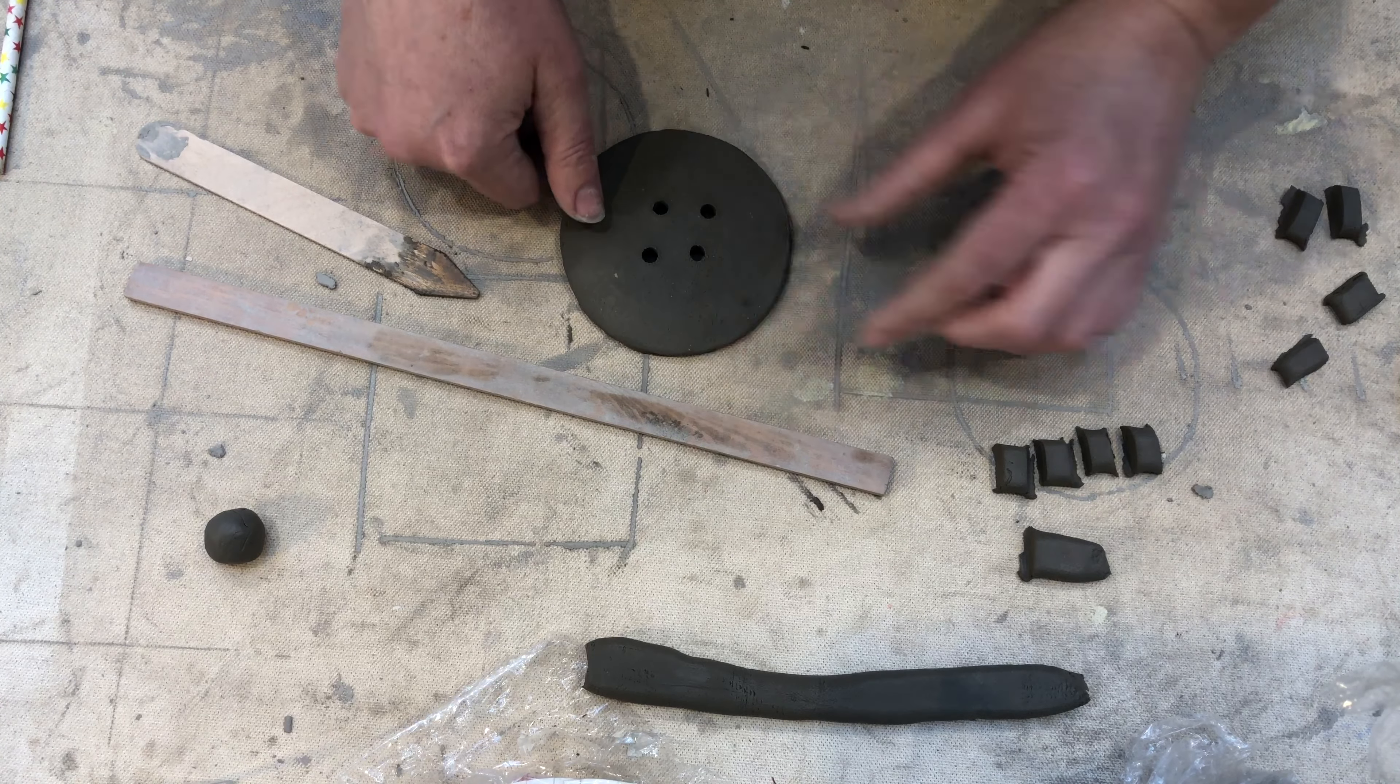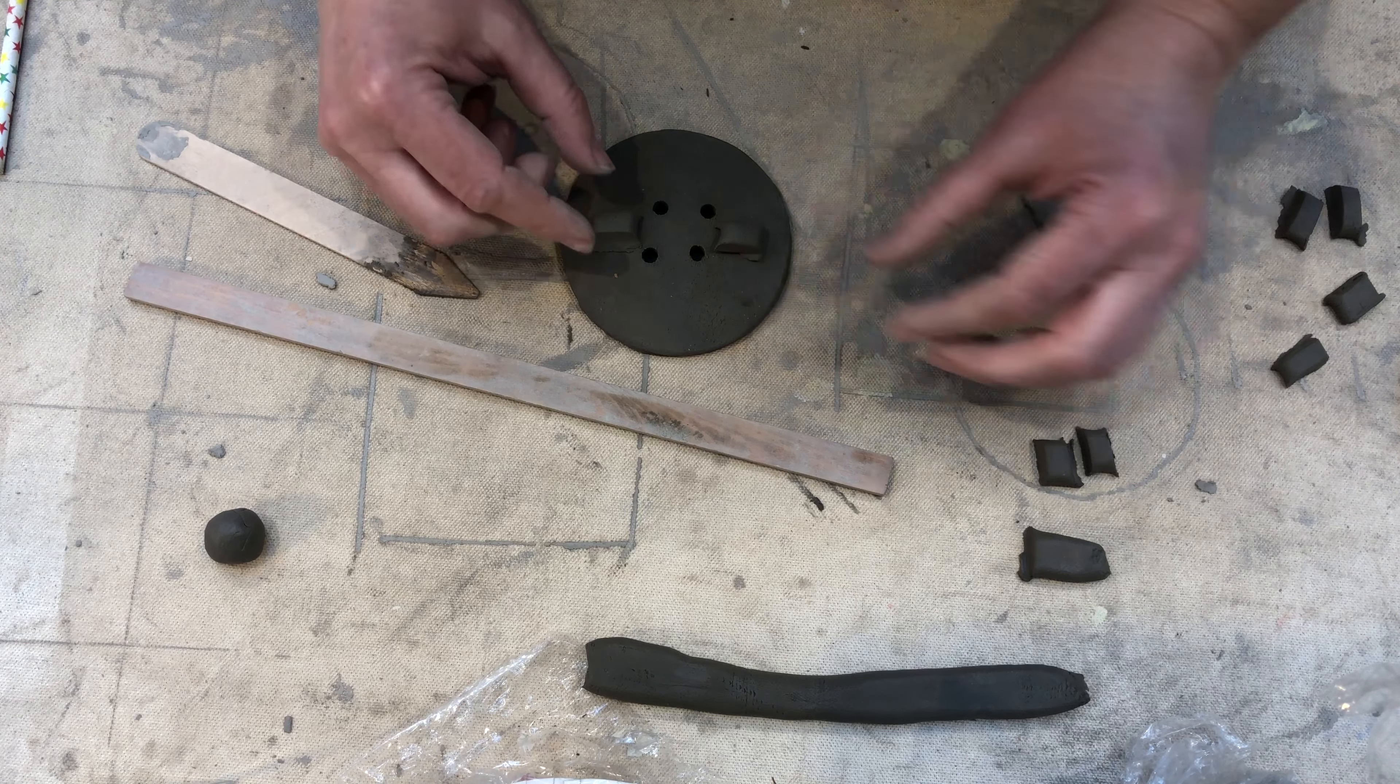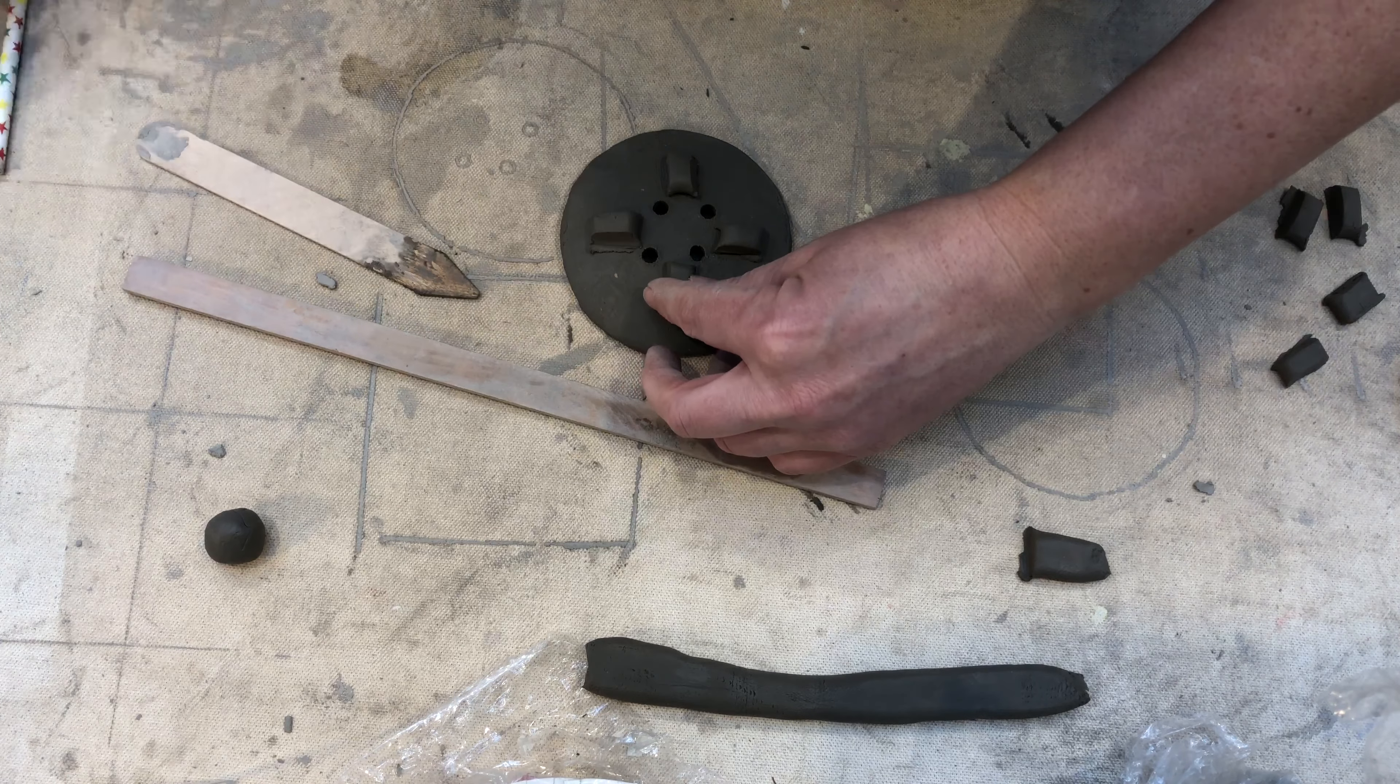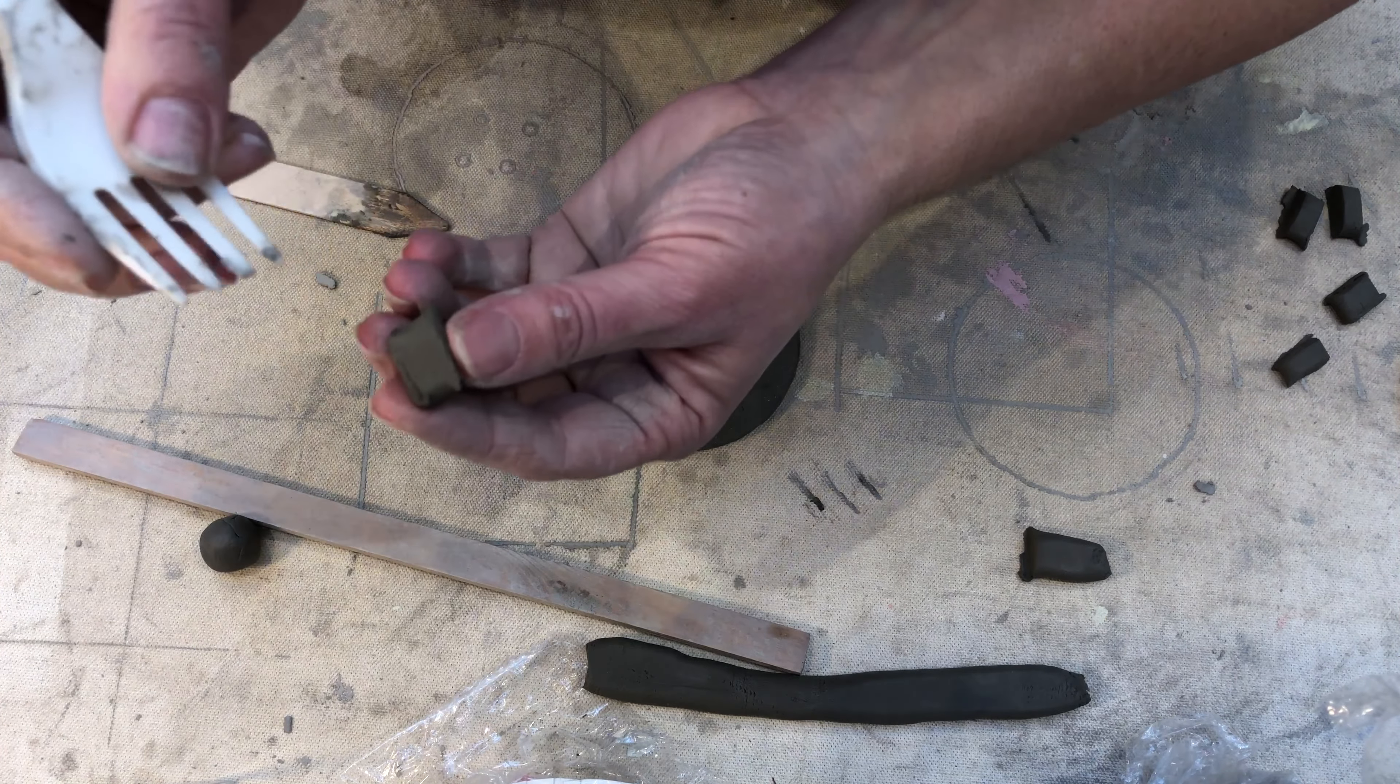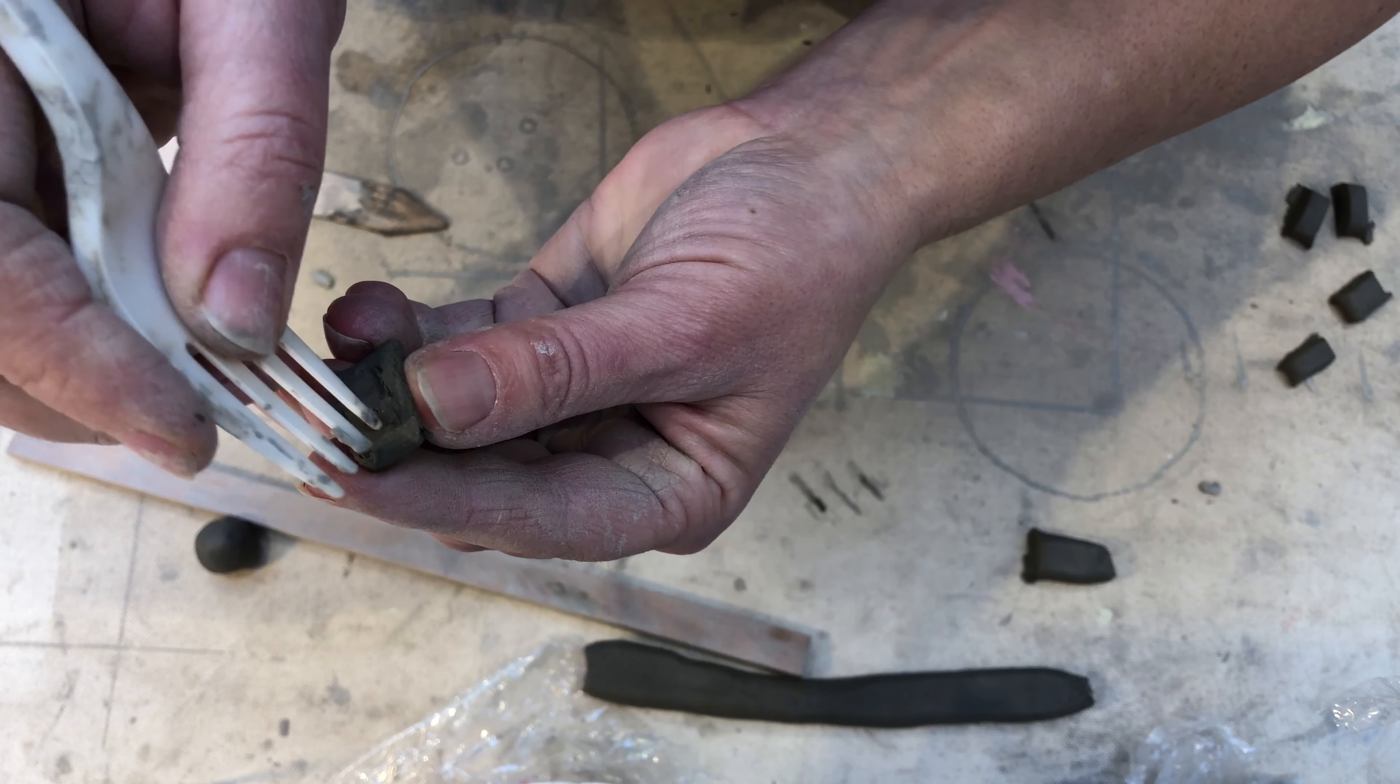Taking my firmer piece of clay now and smoothing off any edges, I'm going to place the feet how I think they should sit. Once I've done that I'm going to use a fork to score in a little area on both sides, on the pot and then on the foot itself. Then I'm going to use slip to join them.